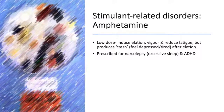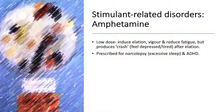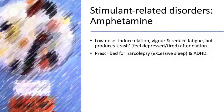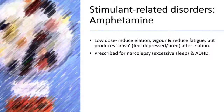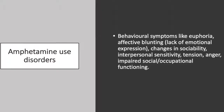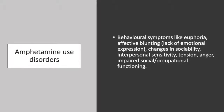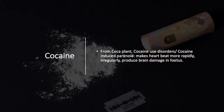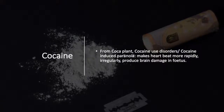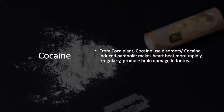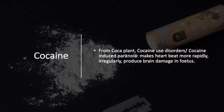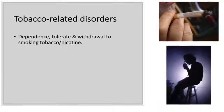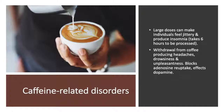Stimulant-related disorders — amphetamines: a low dose of amphetamines induces elation, vigor, and reduces fatigue, but it produces a crash whereby the individual then feels depressed or tired after this elated period. Amphetamines were prescribed for narcolepsy, which is excessive sleep, and individuals with ADHD. Amphetamine use disorder behavioral symptoms include euphoria, affective blunting (the lack of emotional expression), changes in sociability, interpersonal sensitivity, tension, anger, and impaired social as well as occupational functioning. Cocaine, derived from the coca plant, produces symptoms of induced paranoia, makes the heart beat faster and irregularly, and produces brain damage in fetuses. Abuse of cocaine leads to cocaine use disorder. There are also tobacco-related disorders, which is when an individual becomes dependent, develops tolerance, and has withdrawal symptoms to smoking tobacco and nicotine.